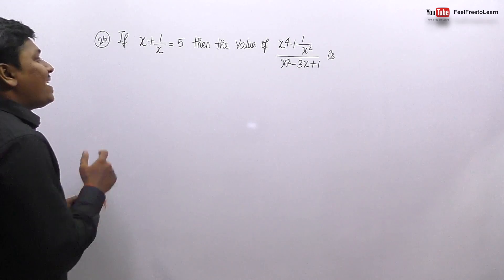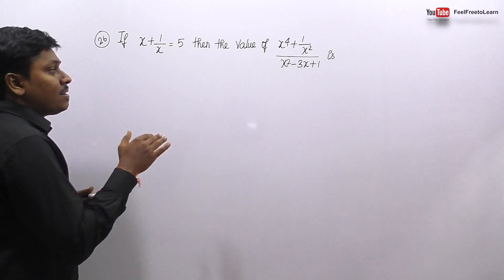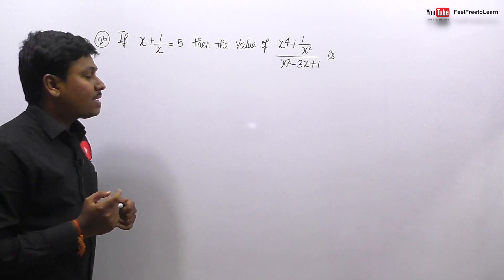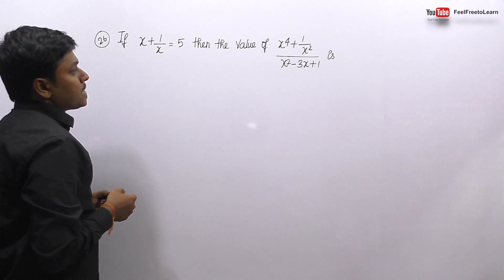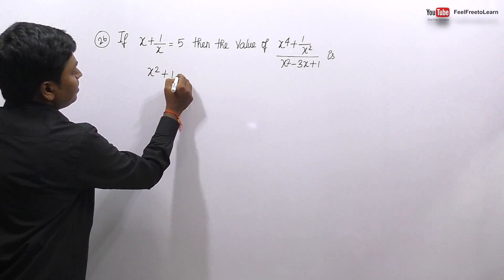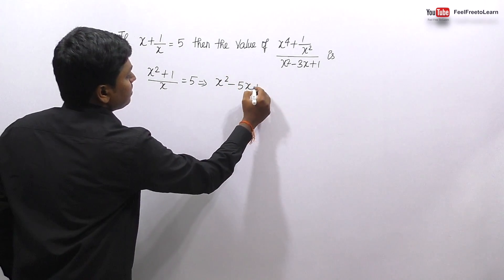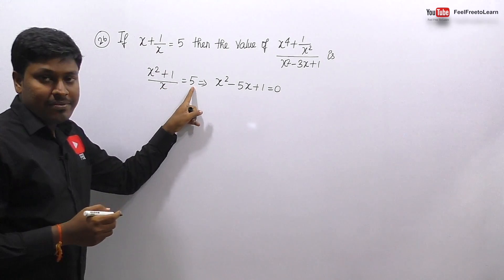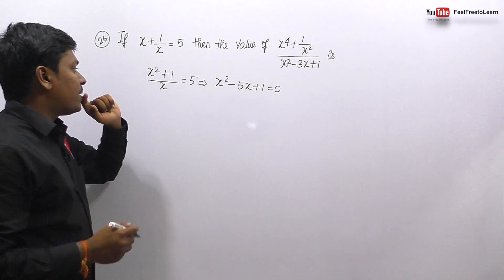Question number 26: if x + 1/x = 5, find the value of (x⁴ + 1/x²) / (x² - 3x + 1). Multiplying through by x: x² + 1 = 5x, which gives x² - 5x + 1 = 0. The denominator has 3x but our equation has 5x, so we split: x² - 3x - 2x + 1 = 0, rearranging to x² - 3x + 1 = 2x. So the denominator equals 2x.